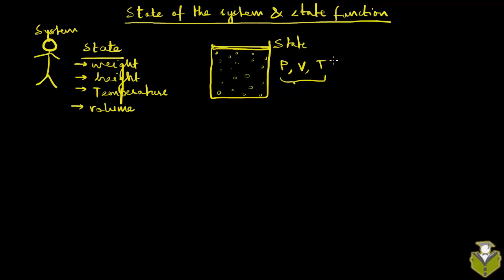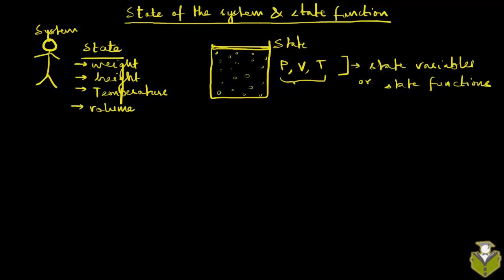These macroscopic or bulk measurable properties are called state variables or state functions — a term you will come across quite a bit in thermodynamics. Similarly, if the system were just your body, your state variables are all the different properties that you can macroscopically measure. Another important point: you don't need a whole lot of properties to uniquely describe the state of the system. You might have 100 different properties you can measure, but you might actually need only three or four — a minimum number — to uniquely describe the state of the system.